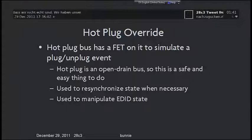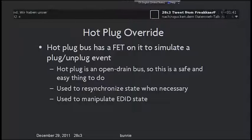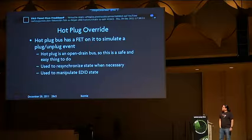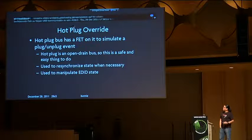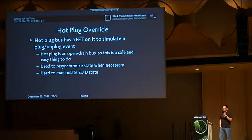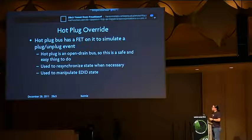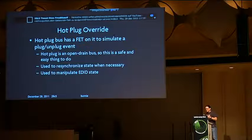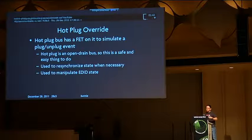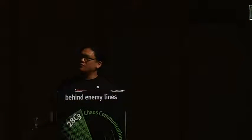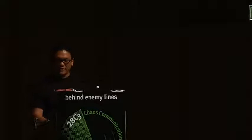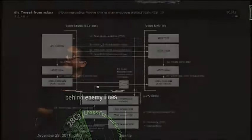We also override the hot plug bus — a little wire used to detect when you plug in your TV set. The hot plug bus has a FET on it, so we can simulate the cable being unplugged without actually unplugging it. This is important because the hot plug kicks off the whole state machine again for resynchronization and reloading all records. We do this a couple of times, particularly on boot, to manipulate all the EDIDs and all of the key state.